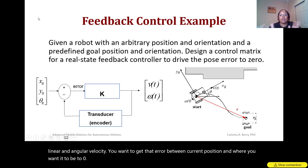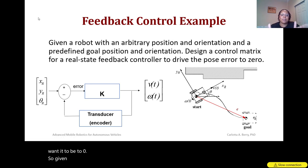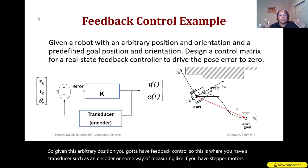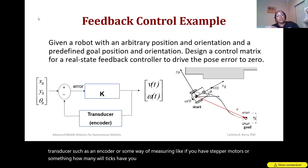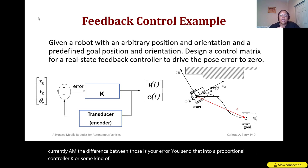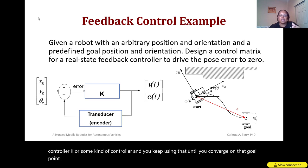For an arbitrary position, you need feedback control. This is where you have a transducer such as an encoder, or if you have stepper motors, some way of measuring how many wheel ticks have occurred. You estimate where you want to be and where you currently are; the difference is your error. You send that into a proportional controller K, or some kind of controller, and you keep iterating until you converge on that goal point, where the output is linear and angular velocity until the robot eventually gets there.